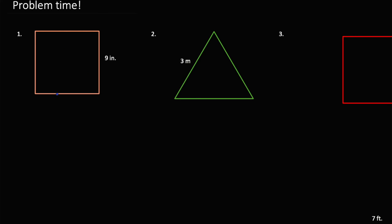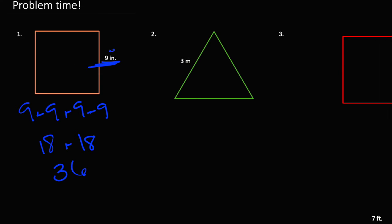This one's a square. Remembering what we learned earlier, we know that all the square's side lengths are the same. So since one of them is 9, we know that all of them are 9. So it would be 9 plus 9 plus 9 plus 9. 9 plus 9 is 18, and 9 plus 9 again is 18, and 18 plus 18 is 36. We can check the units and see that they're inches, so it would be 36 inches.